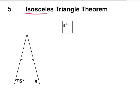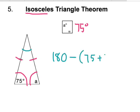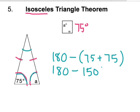An isosceles triangle is a triangle where two sides are equal. If this angle is 75, then this angle also has to be 75 degrees. Can you find the third angle? We subtract 75 plus 75 from 180. 75 plus 75 is 150, so we have 30 degrees left over. This angle would be 30 degrees.